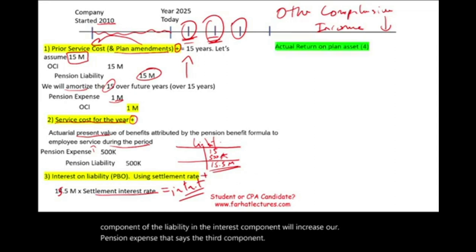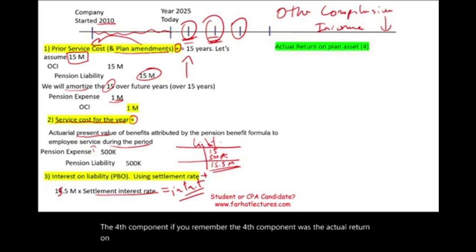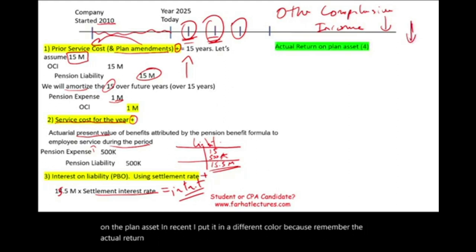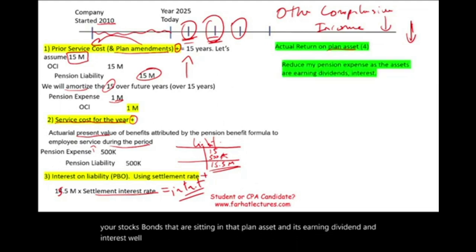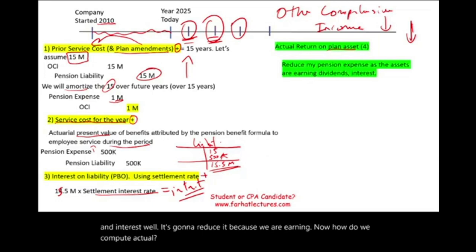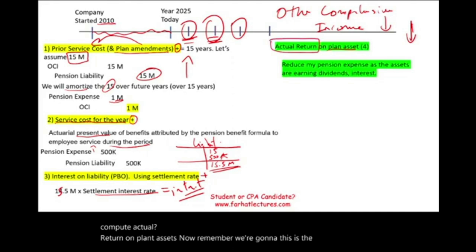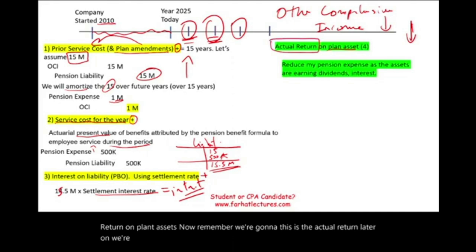The fourth component was the actual return on plan assets. The actual return will reduce pension expense because it's what you are earning on stocks and bonds sitting in the plan asset — dividends and interest. Note that we're talking about the actual return now, but later on we'll be using the expected return instead, and I'll explain why when we get to that point.